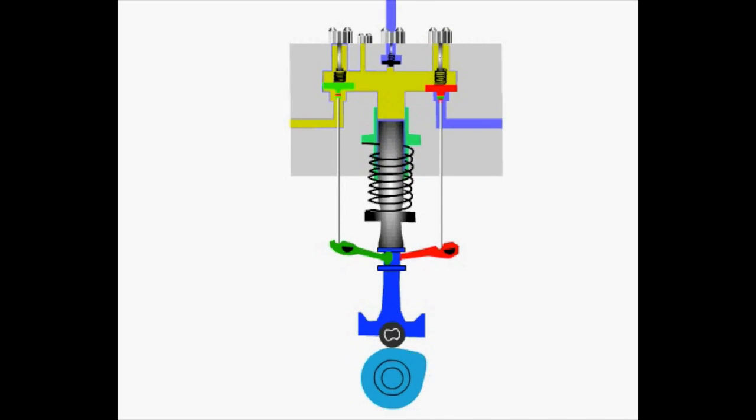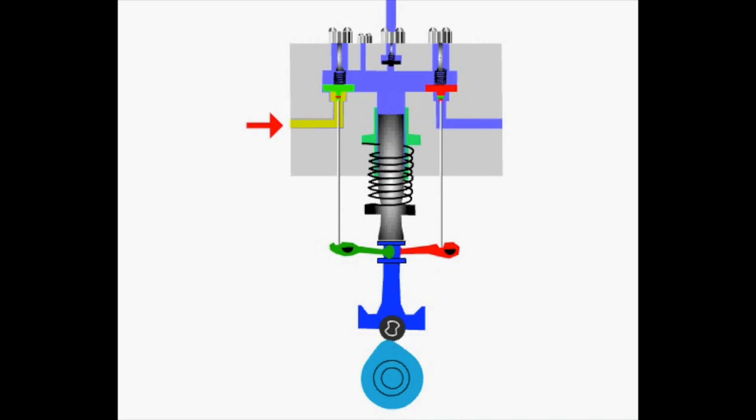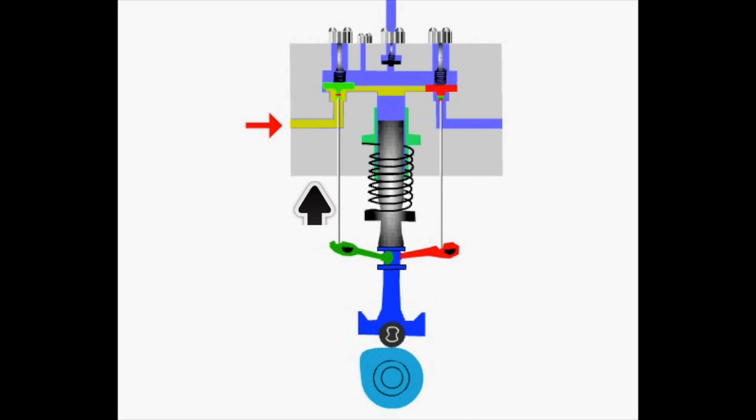let's take a look at this system in slow and step-by-step motion. When the follower rolls on the base circle, the suction pushrod lifts the suction valve and fuel goes inside the pump.